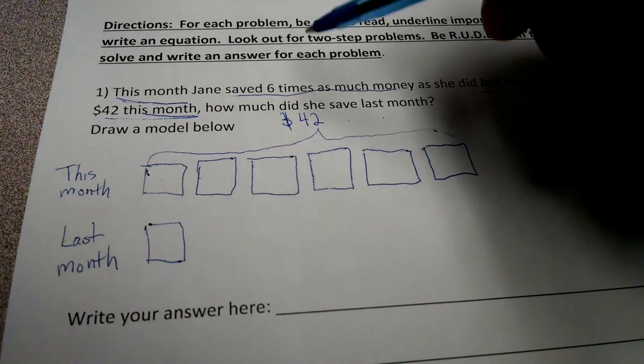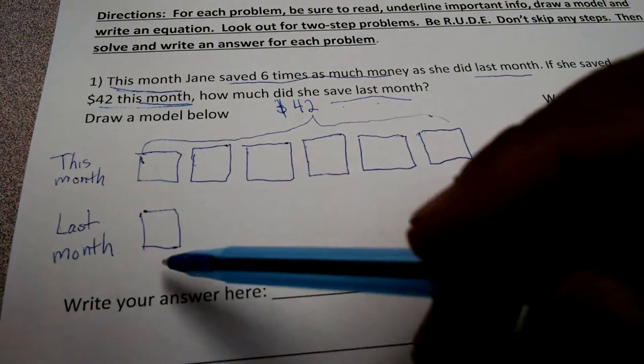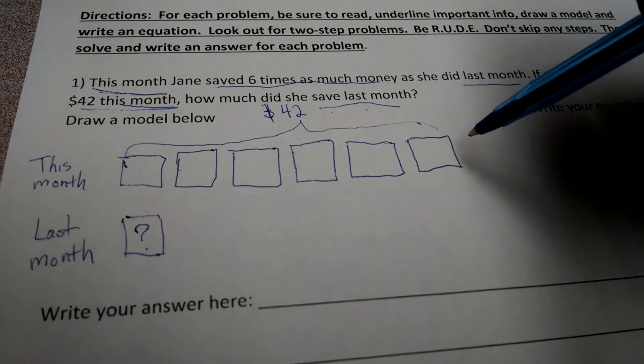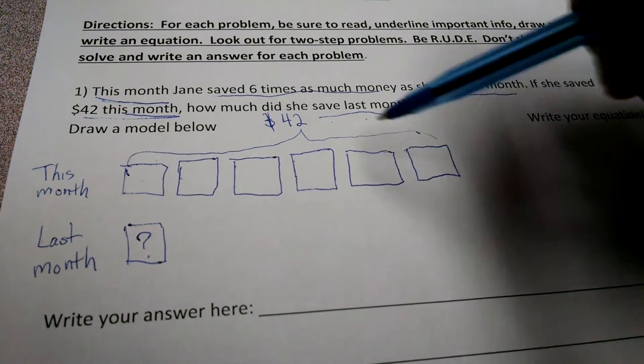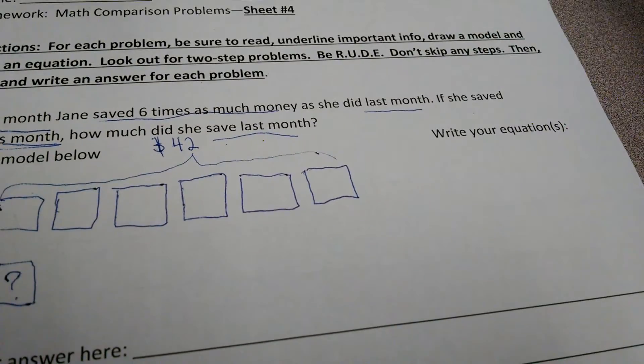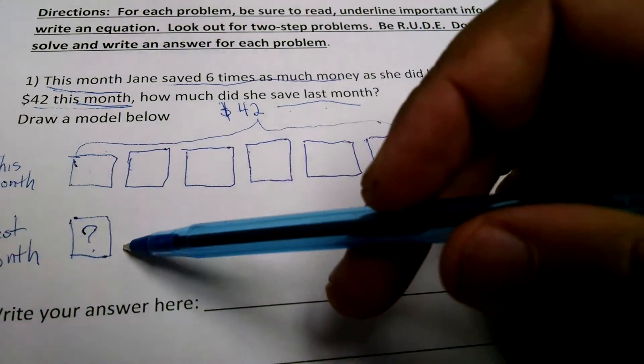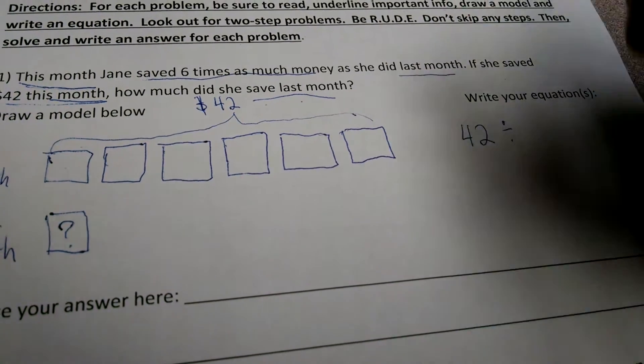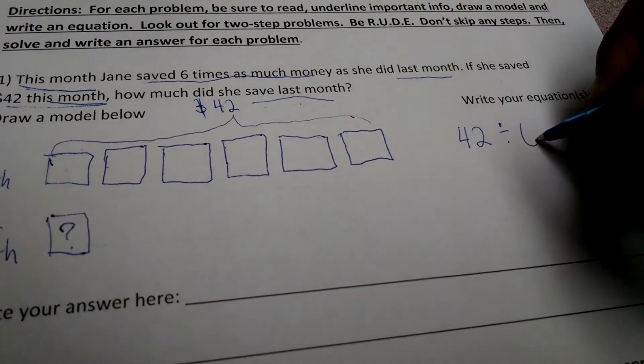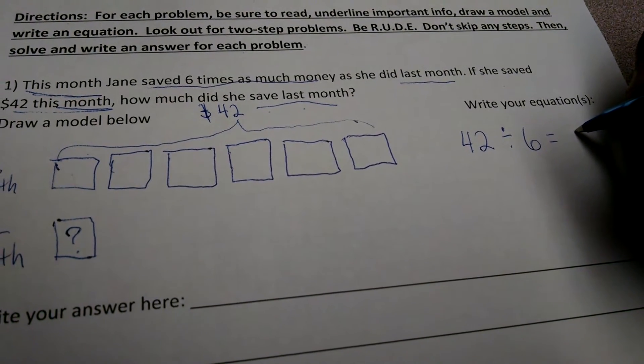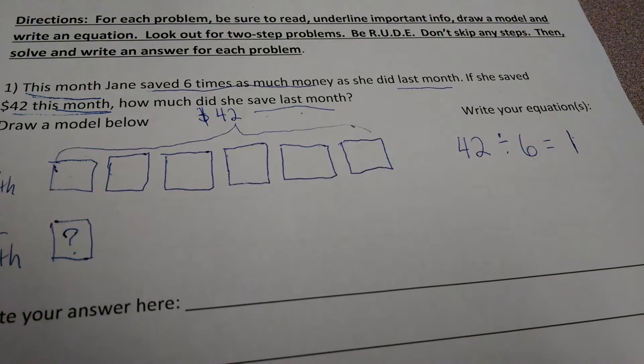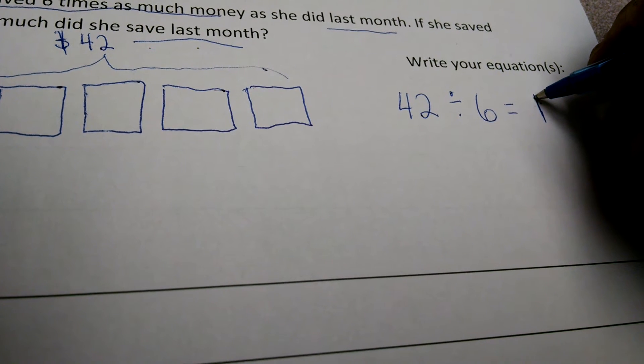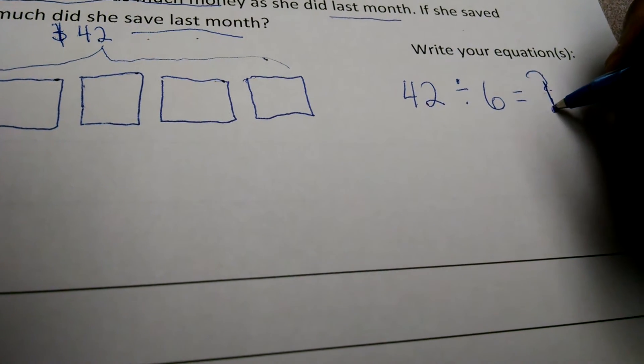They want to know, how much did she save last month? So, I need to know what the value of one of these squares is equal to. Well, I know six of these squares is equal to 42. So, I'm thinking to myself, okay, this is division. Because I'm looking for the smaller amount. I have the total amount. So, I write that as 42. Divide it by, well, there's six parts. So, I divide it into six. And that equals the amount of money she saved last month. So, I'll write L for last month. Or, I could rewrite it. And let's not make that, let's make this, let's make this a question mark. I don't want to use that.